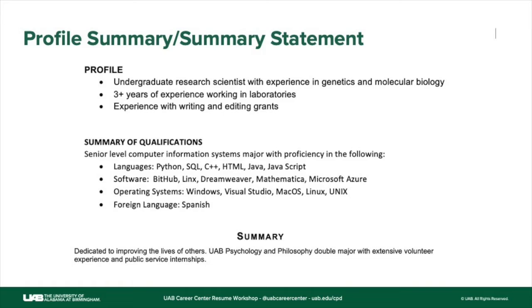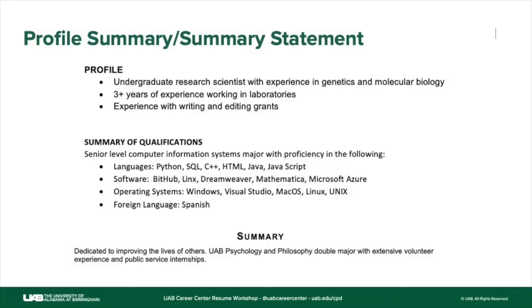You can do it in bullet format or in a summary format — keep in mind summary is different from sentence. If you were to do it in the profile bullet format, you would list things that you're really proud of. For example: undergraduate research scientist with experience in genetics and molecular biology. This statement does not hold much weight on its own, simply because this is UAB and there could be a number of students with experience in labs under genetics and molecular biology. So it's not as specific.